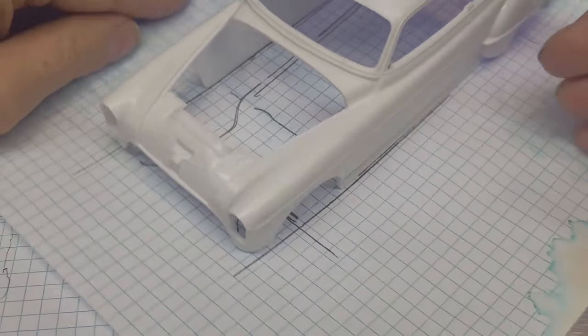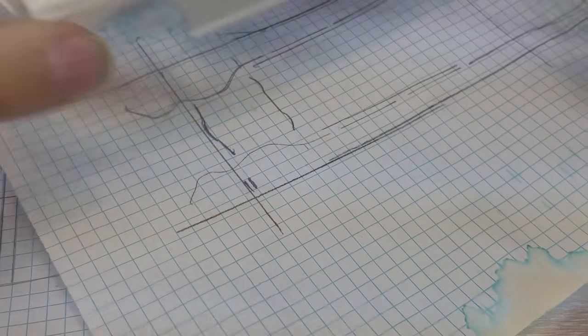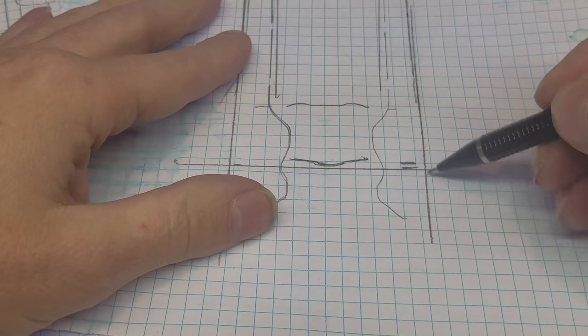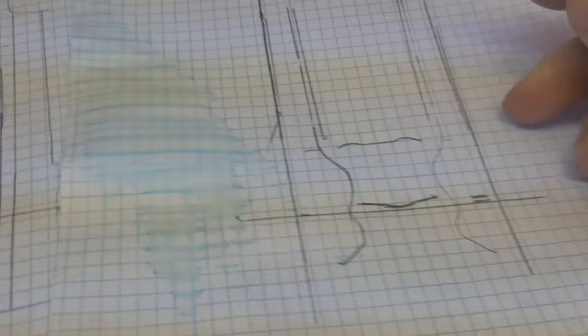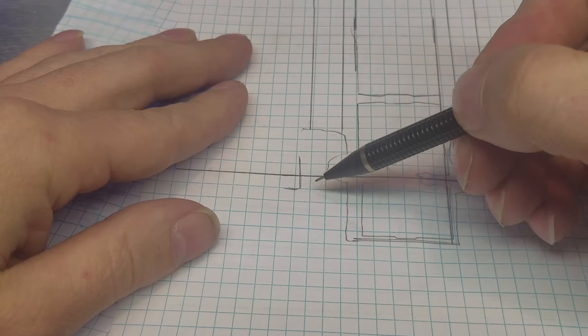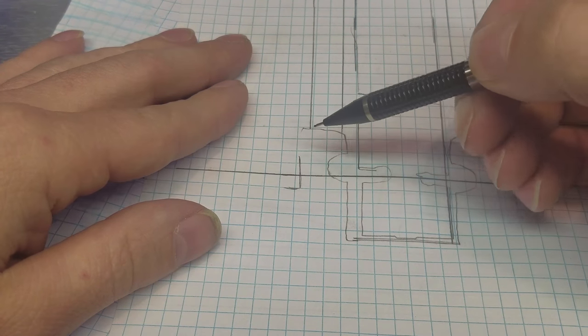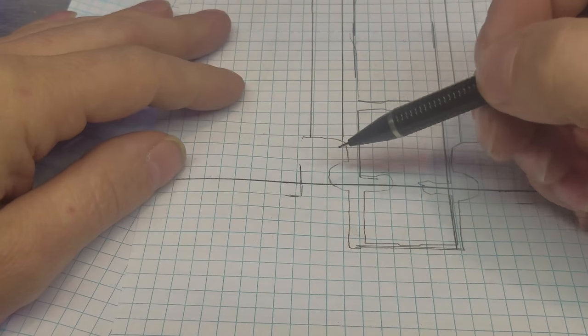So as you guys can see, that's the width of my body, so I know the tires, the outside of the tire needs to line up right there. So that's what this reference on the Mustang would be, is that line would be the Mustang's width of the body. It's pretty close to the pan, so I know my tires are going to be there.